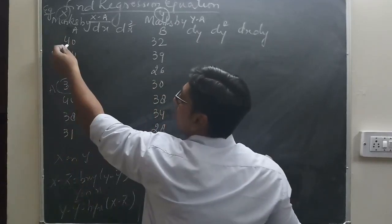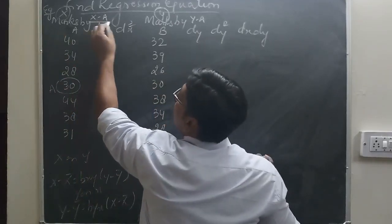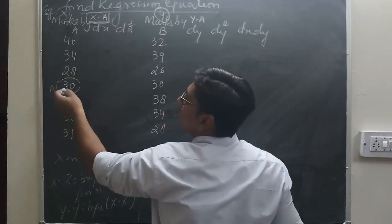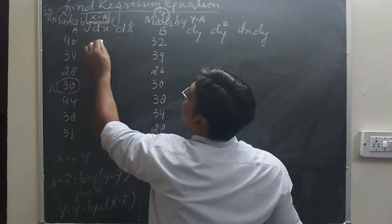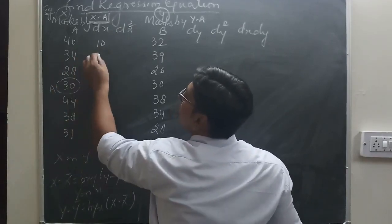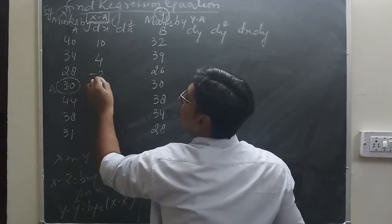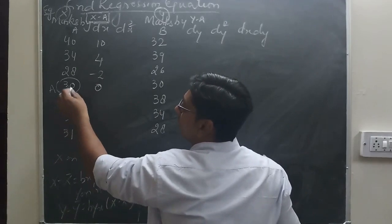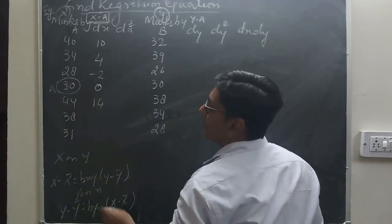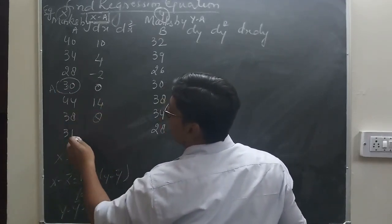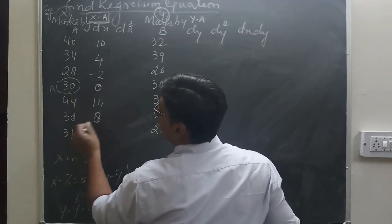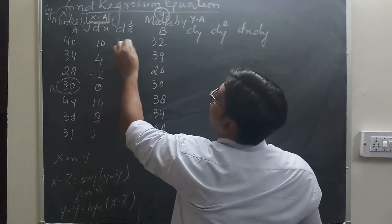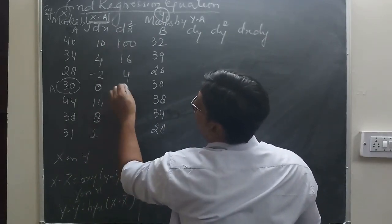dx = x − a. Here x values are given; we take a = 30. So: 40−30=10, 34−30=4, 28−30=−2, 30−30=0, 44−30=14, 38−30=8, and 31−30=1. Now I find dx²: 100, 16, 4, 0, 196, 64, 1.